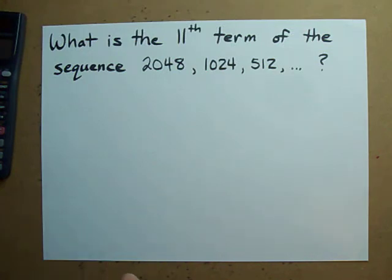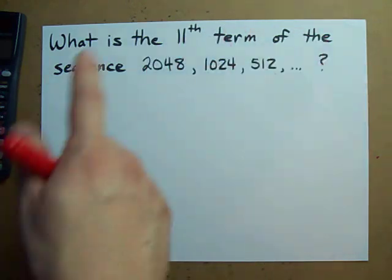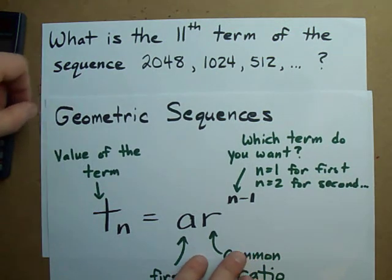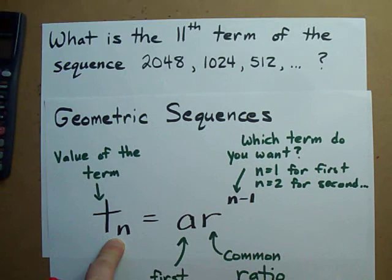A geometric sequence has a certain number either multiplied to give you the next term, or divided to give the next term. Luckily for you, there's a formula for the value of a term in a geometric sequence.